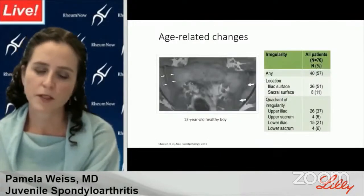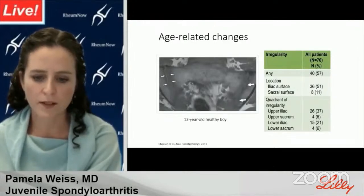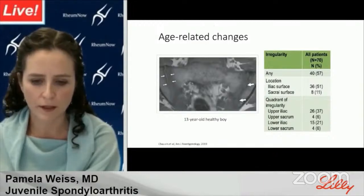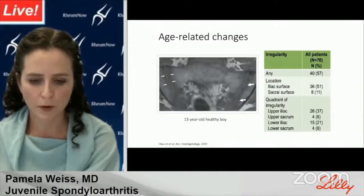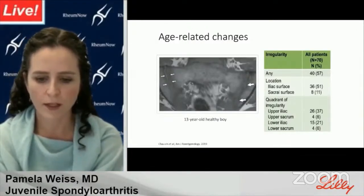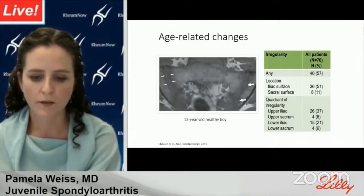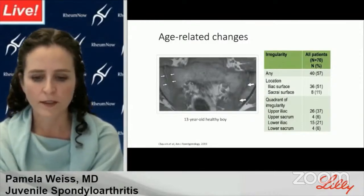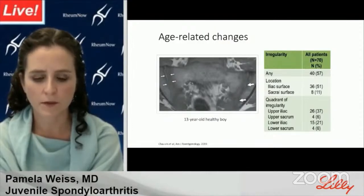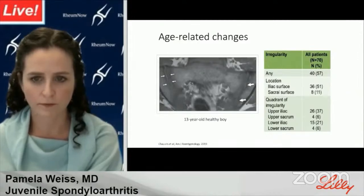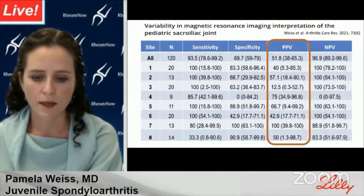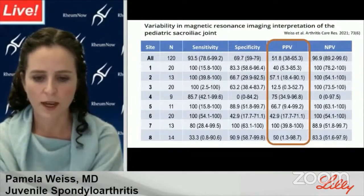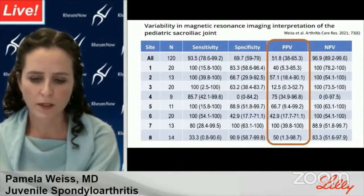MRI can also be tricky in youth for reasons beyond active inflammation. As part of the study of 70 healthy kids, we evaluated the prevalence of cortical irregularities, and found that SIJ cortical irregularities are really common — they occur most often along the ilium and are most numerous in the peripubertal group. This correlates with autopsy findings that sacroiliac bony surfaces are smooth until puberty, then develop bony ridges and grooves primarily of the ilium. This is different from adults, in whom irregularities may infer degenerative change, and we don't want them mistaken for erosions.